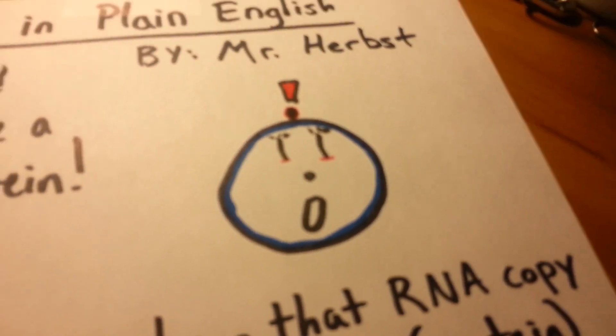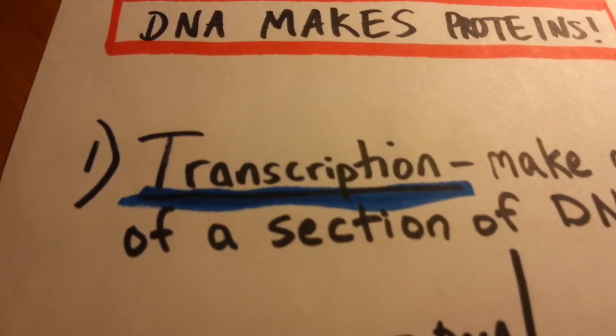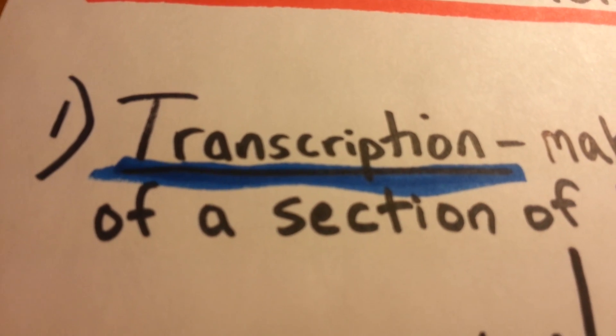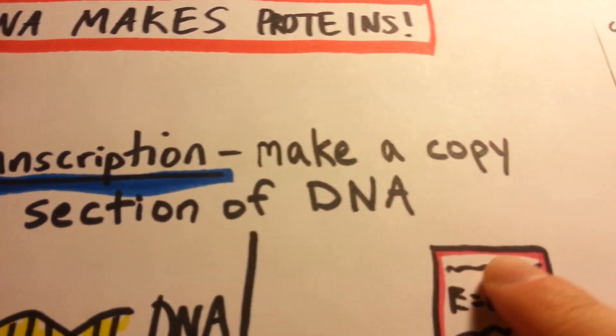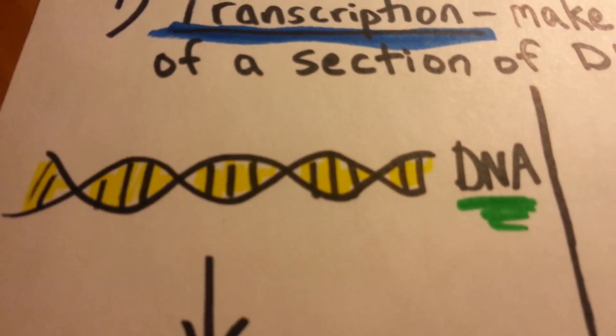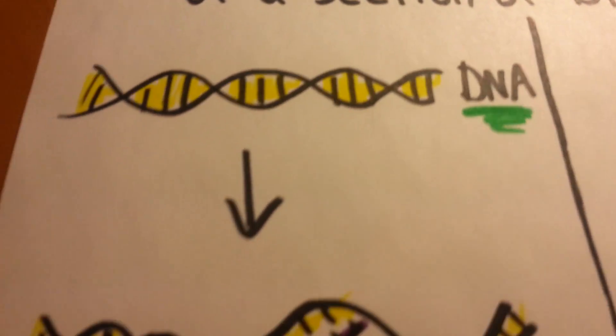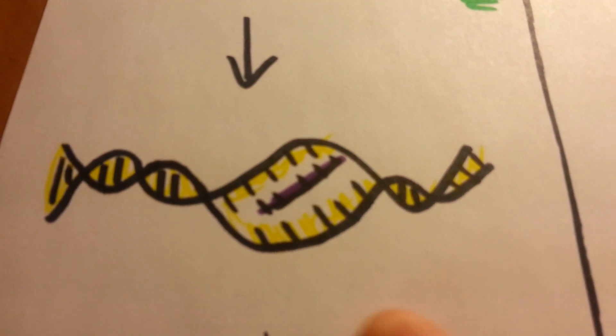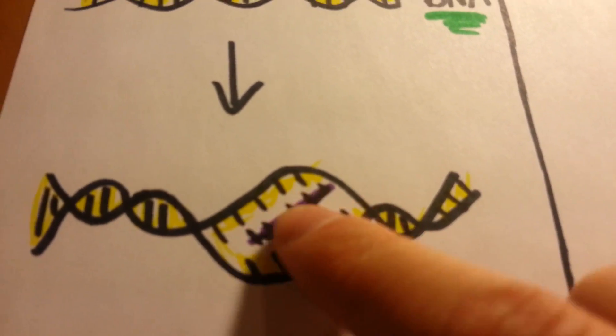Well, silly Susan, you know, it's really not all that complicated. It begins right here with process one called Transcription, where we're going to make a copy of a section of DNA. So here we have silly Susan's DNA.